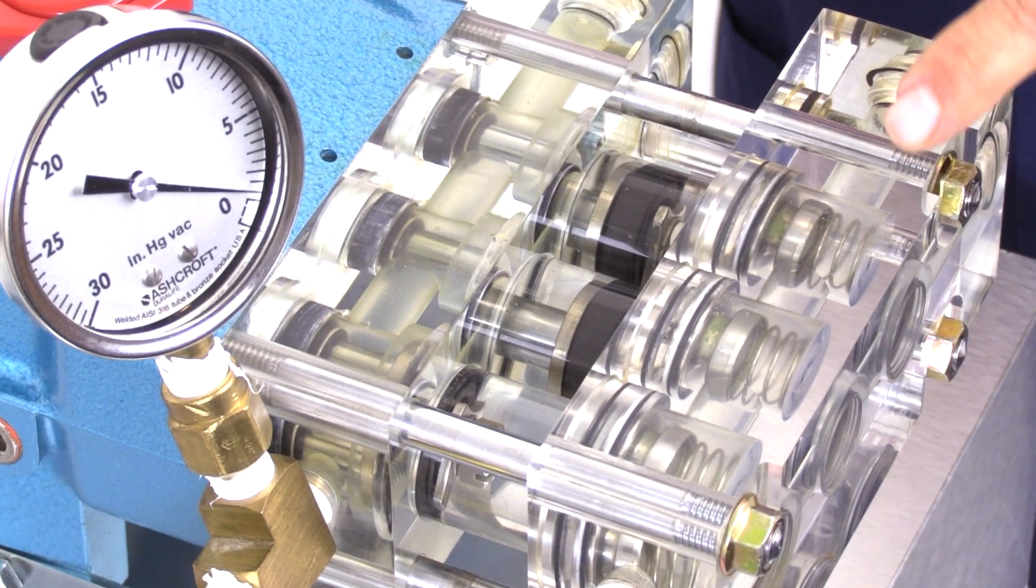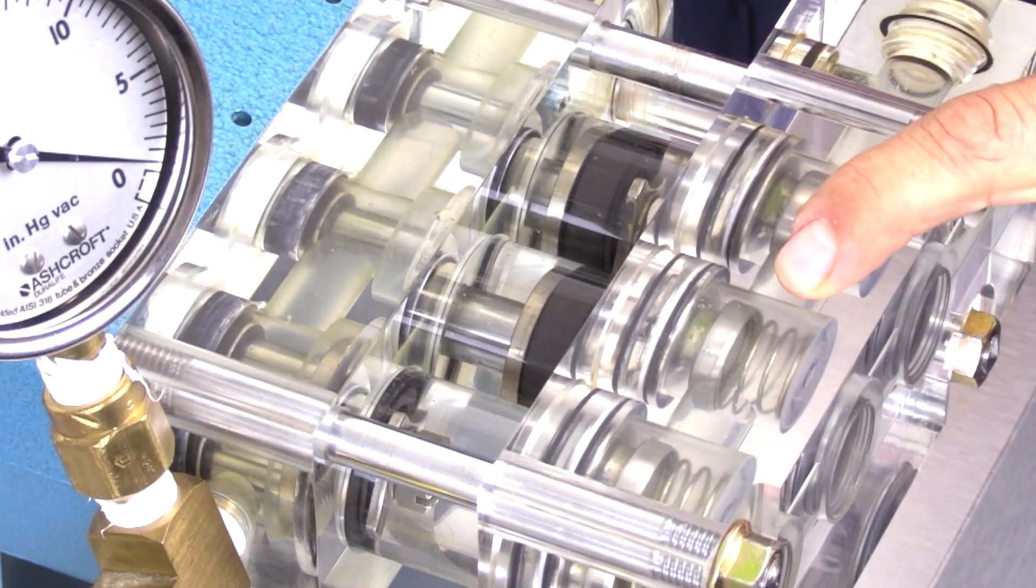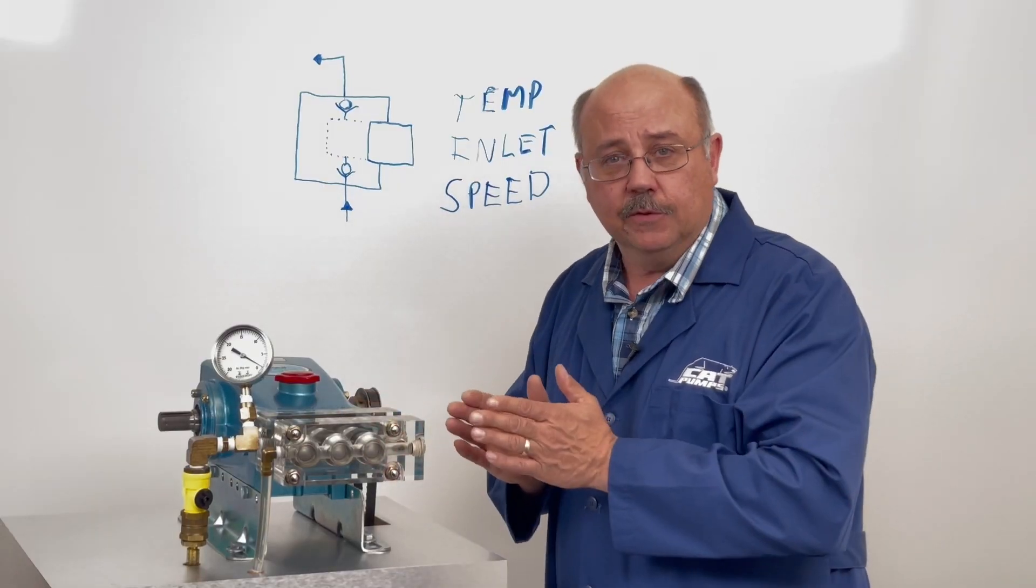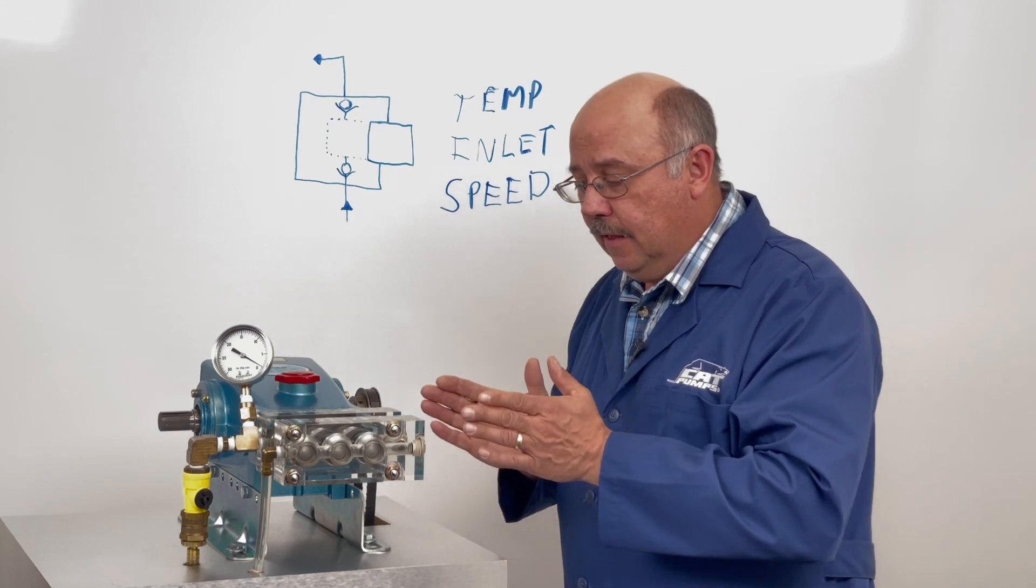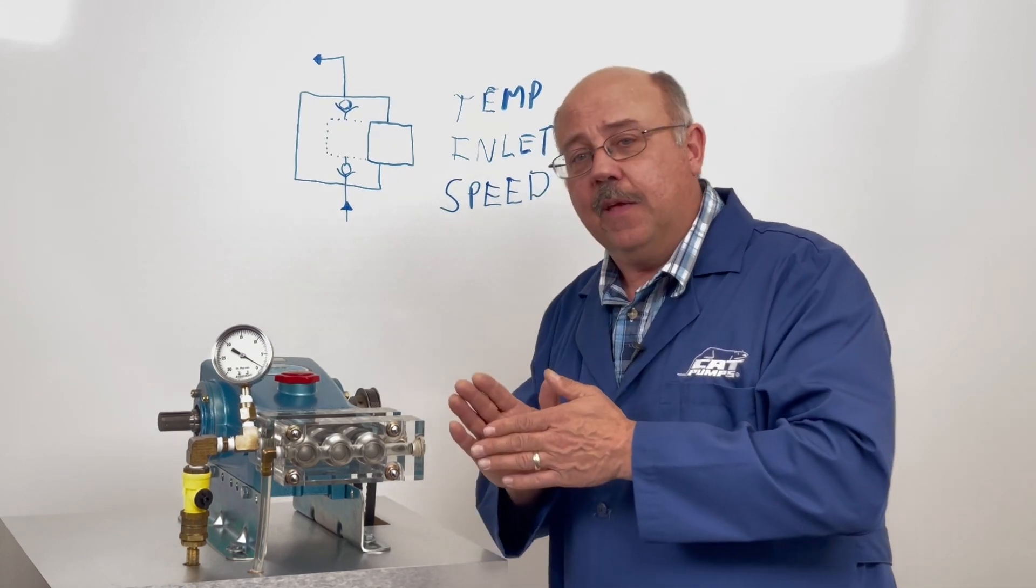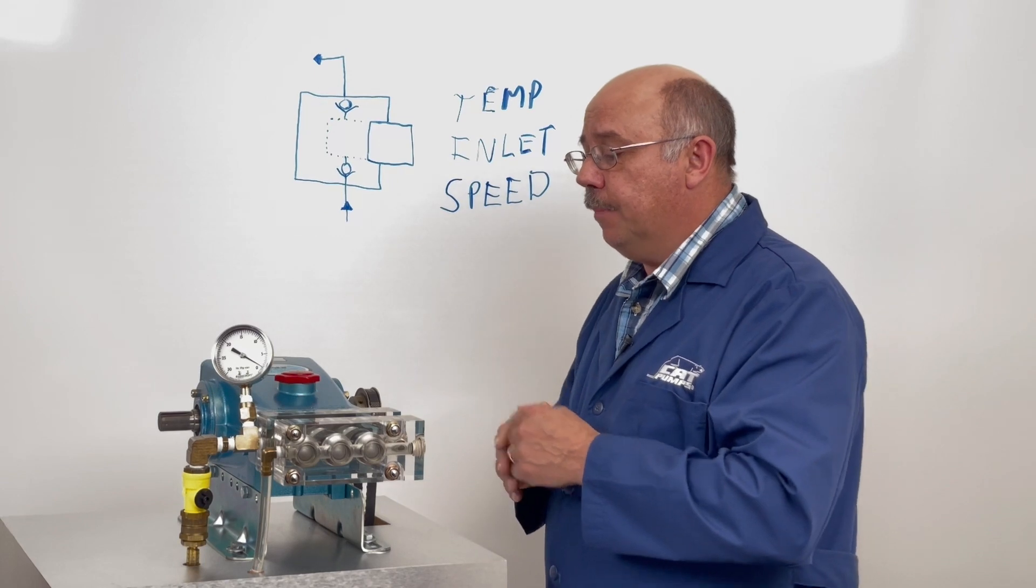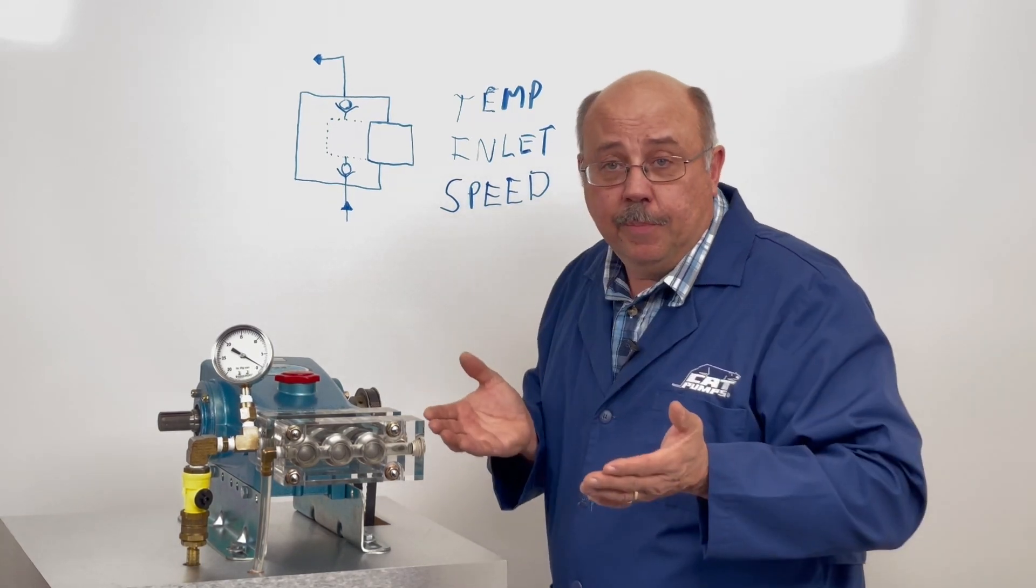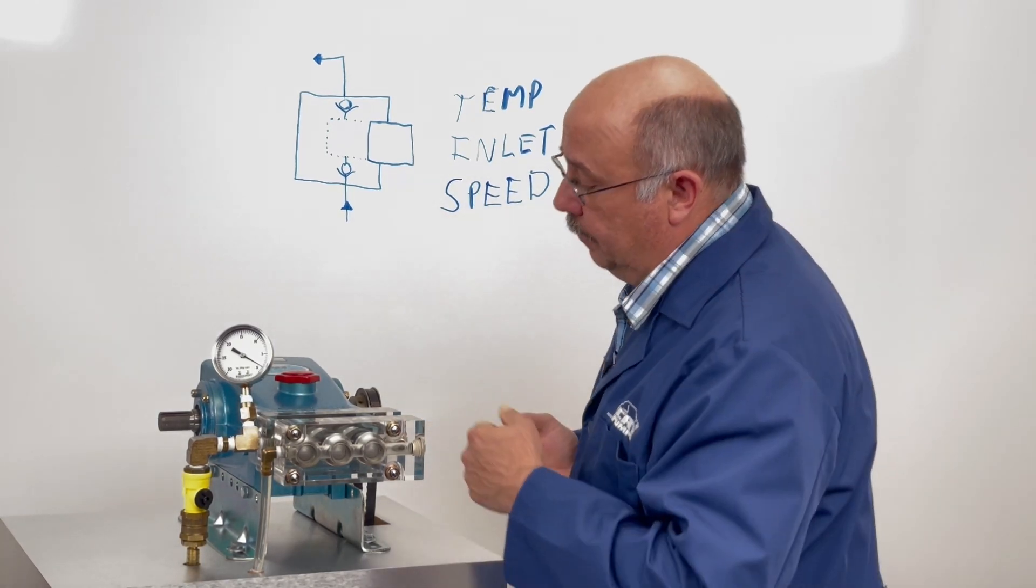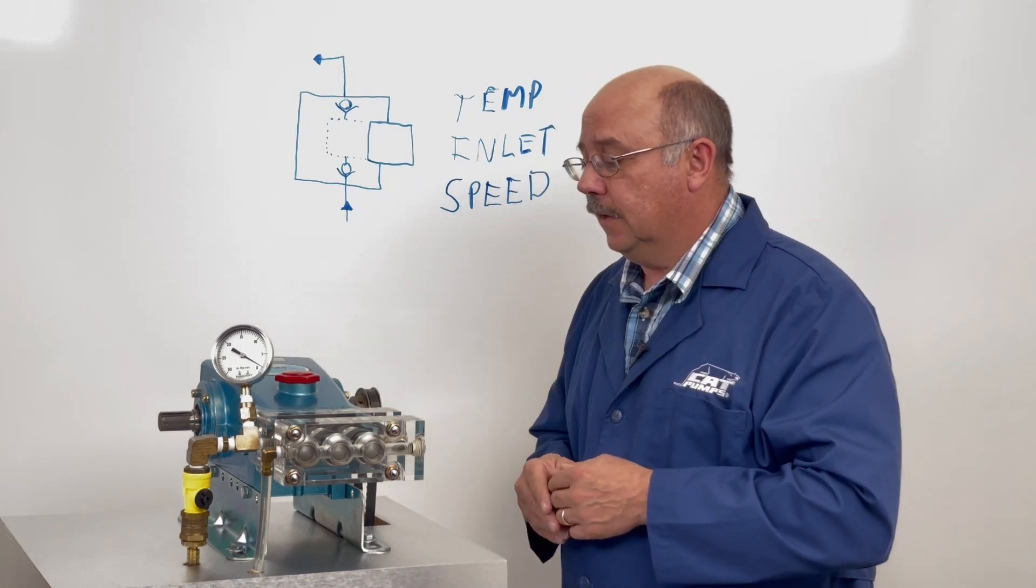And then there's a discharge valve assembly with a spring and a valve that's held closed by that spring. And then during the forward stroke that valve will come off enough to let that volume of water escape. And that's how the pump operates. And so we'll fire this up and get her going.